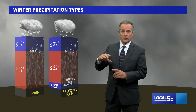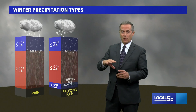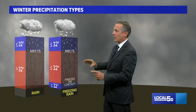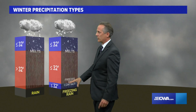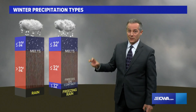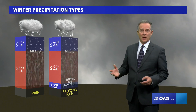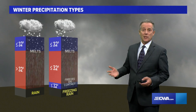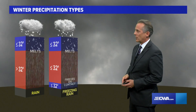maybe the last thousand feet or even shallower than that, it's below freezing. That cold air near the surface creates freezing rain — it touches the surface and freezes on contact in many areas. It could be trees, roads and bridges, things like that.